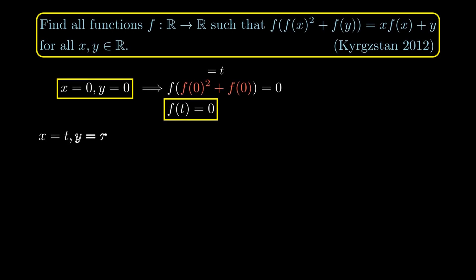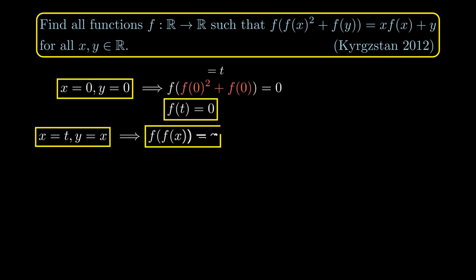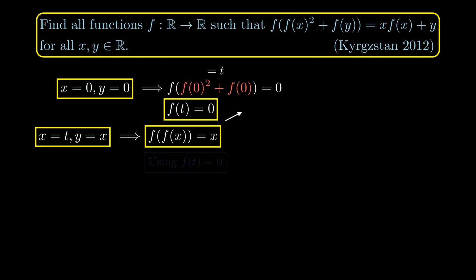With this t value, we can set x = t and y = x, where x here is a free variable. We get that f(f(x)) = x, because the other terms disappear since f(t) = 0. Such a function f is called an involution — if you apply f twice to an input x, you get back the input.